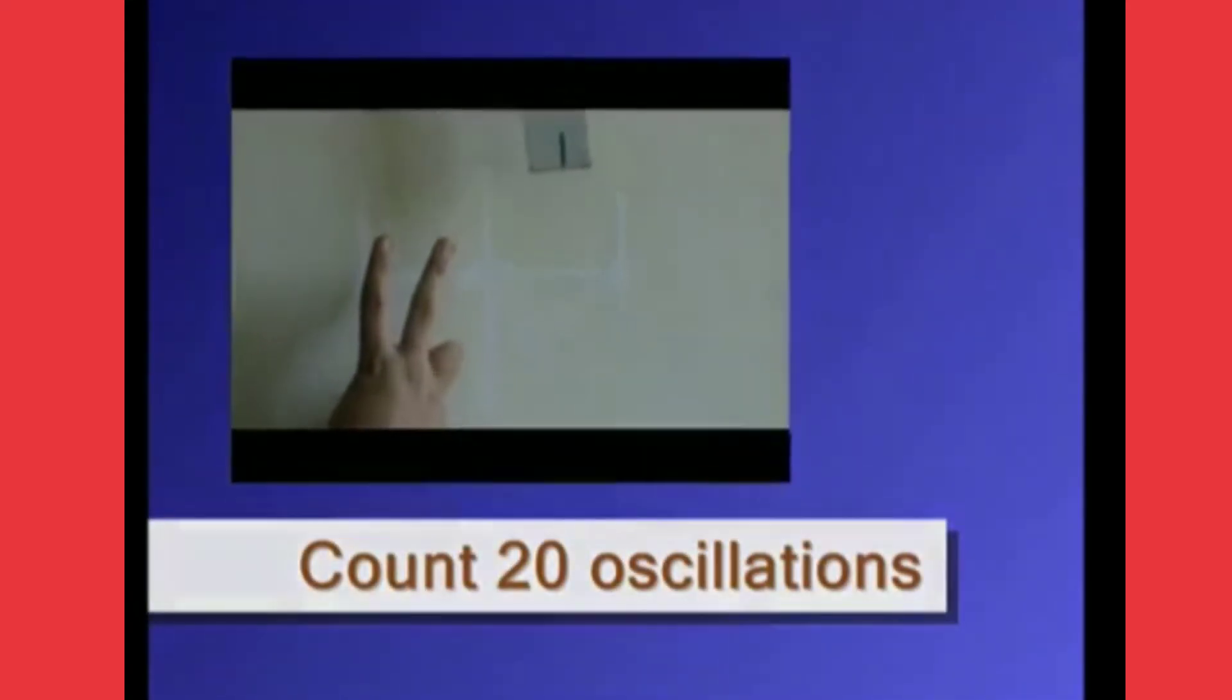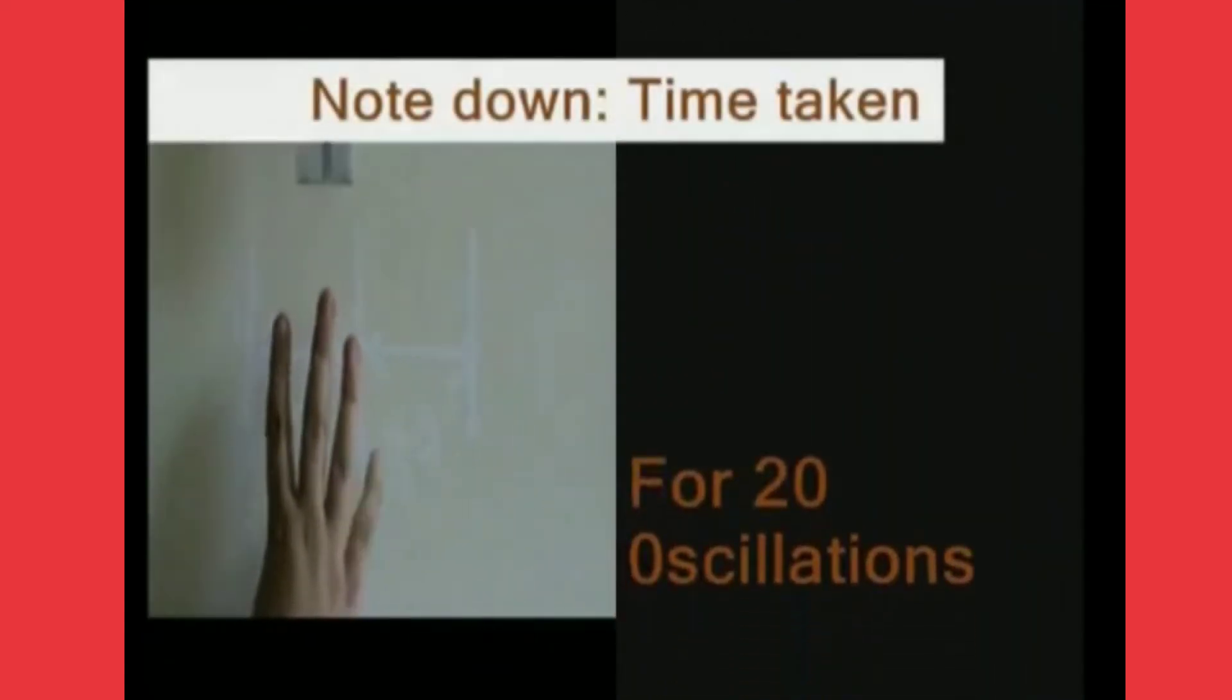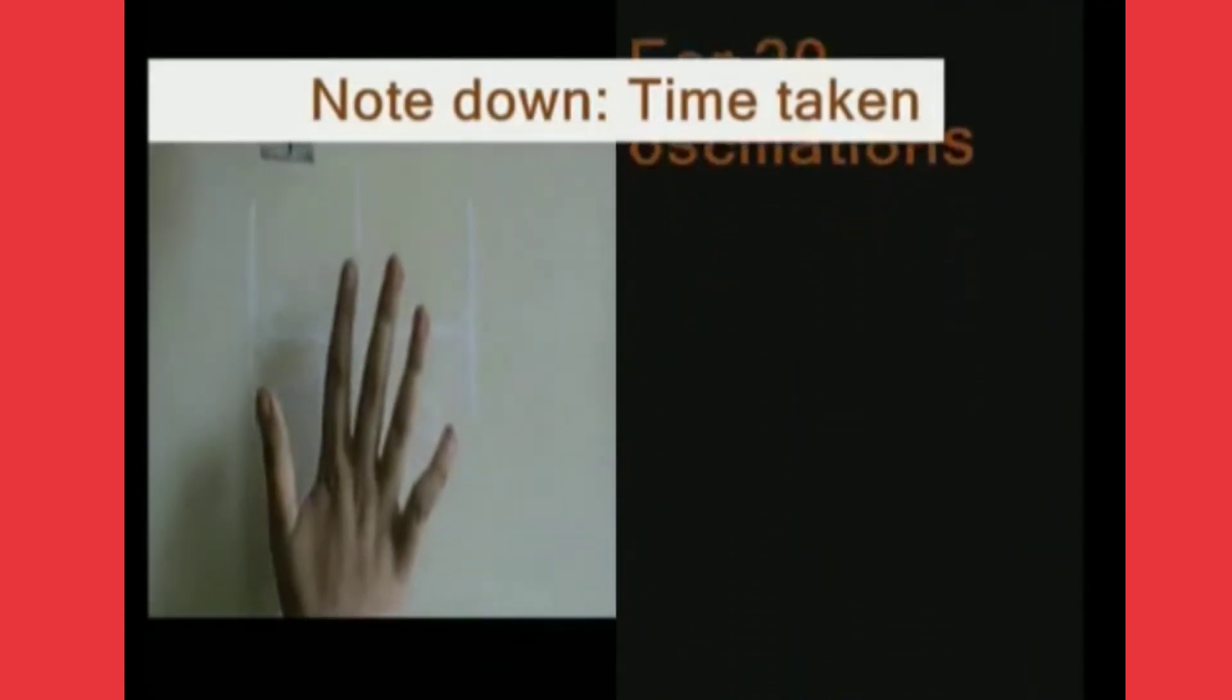Now leave the pendulum and start the stopwatch at the same time. Count the oscillations for 20. Note down the time for 20 oscillations from the stopwatch in the given tabular form.